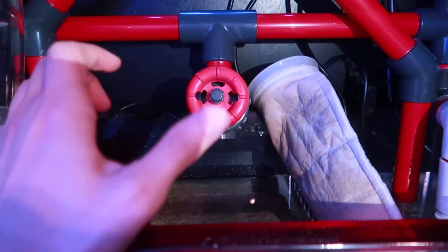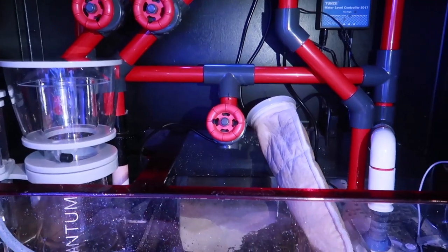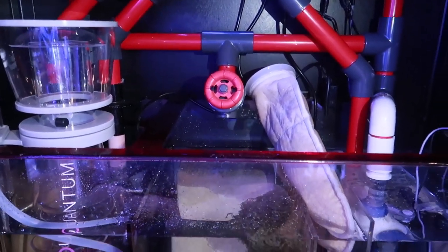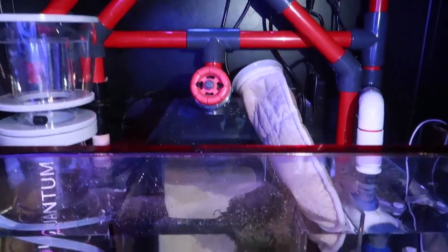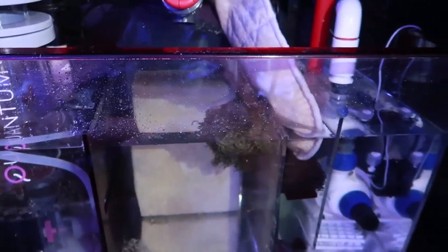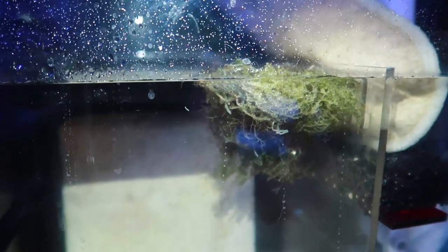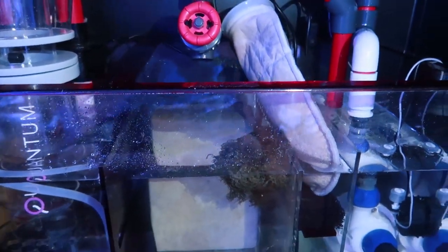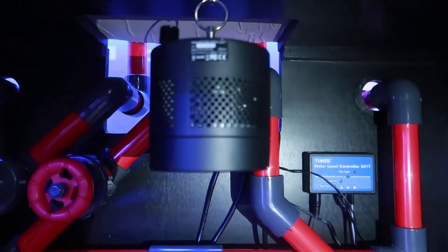I'm going to have one reactor tied up to my manifold. I may run GFO, carbon, whatever. I'm probably leaning towards carbon because I will be filling this tank with bubble tips just to prevent any of that kind of chemical warfare that goes on between them. Second bit of filtration is my refugium, which by the way is looking absolutely fantastic.